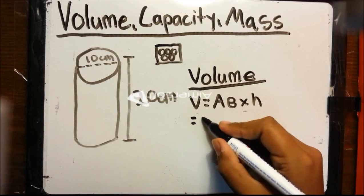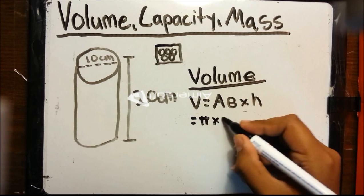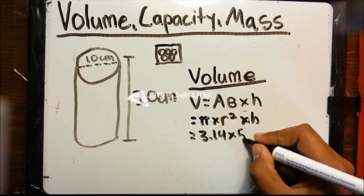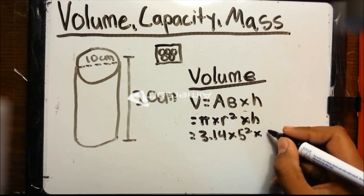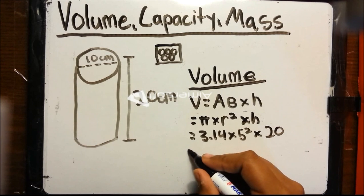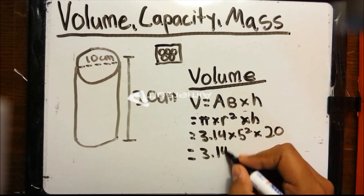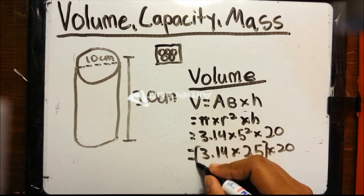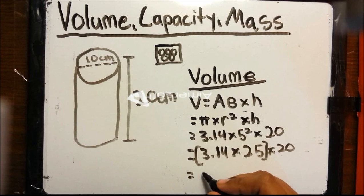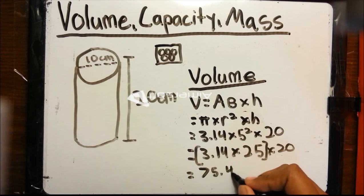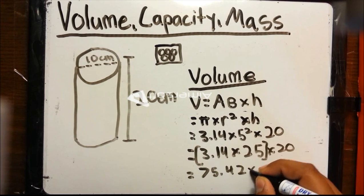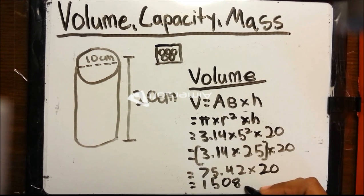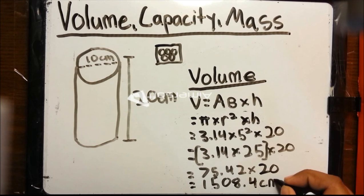Let's plug in the numbers. Volume equals pi times r squared, multiplied by height, which equals 3.14 times 5 squared, multiplied by 20 centimeters. This equals 3.14 times 25 times 20. The area of base equals 78.5, which multiplied by 20 means that the volume is 1,508.4 cubic centimeters.